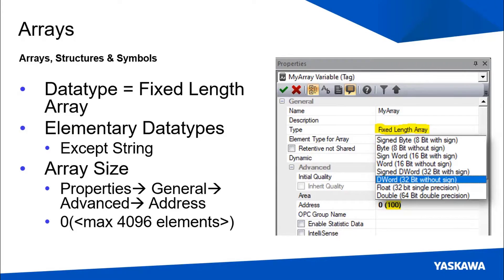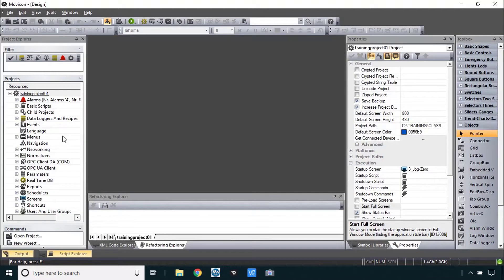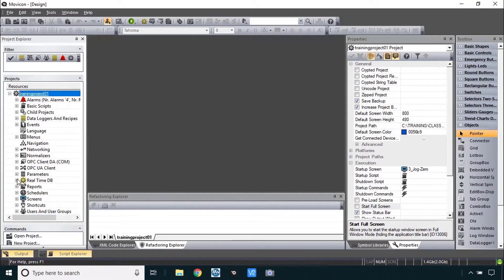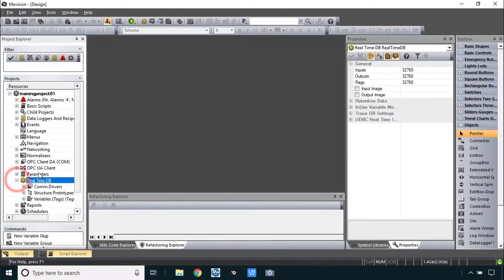Let's start at the beginning and talk about the array data type first. To make an array you create a variable and choose the data type fixed length array. You can make an array of any elementary data type except string, and it can have a maximum of 4096 data elements. I'll go ahead and demonstrate that now — please follow along in the real-time DB.